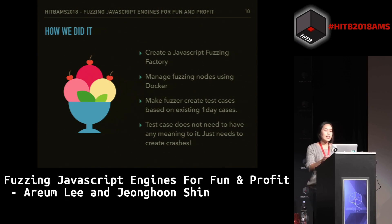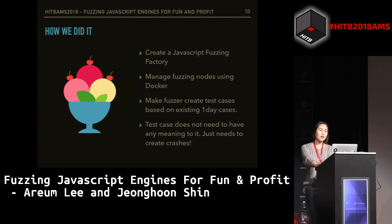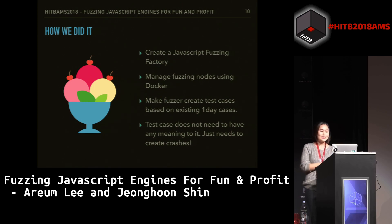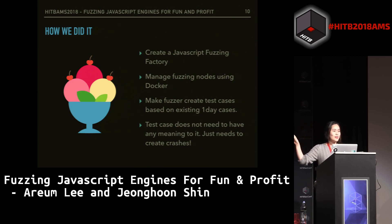And this is how we did it. We decided to create something we call a JavaScript fuzzing factory, which is basically a platform for the fuzzers. The nodes of the fuzzers will be managed using Docker, and we will make our fuzzer create test cases based on existing one-day cases. You can think of the blue bowl as our JavaScript fuzzing factory, the ice creams as our Docker nodes, and the cherries on top as our fuzzers.